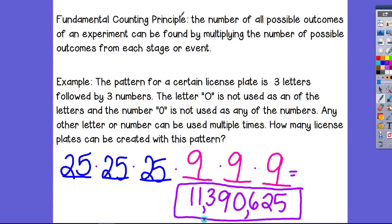So the big idea is to figure out the total number of possible outcomes, you're just going to multiply all of the individual possible outcomes for each stage or each part of the experiment. You just multiply them all to get the total number.